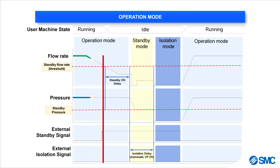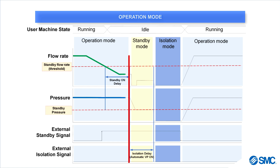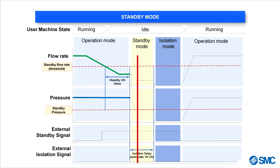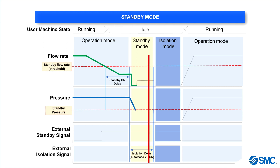When the user machine goes into idle mode, the flow rate drops. Once the flow rate drops below the standby flow rate threshold, the standby on delay timer is started. After the standby on delay time period has passed, if the standby input signal is still on, the system will lower the standby pressure.